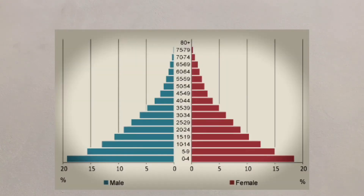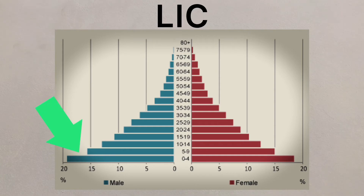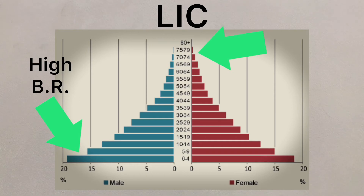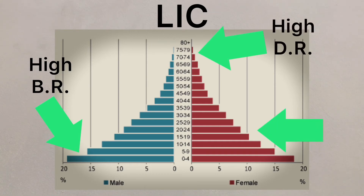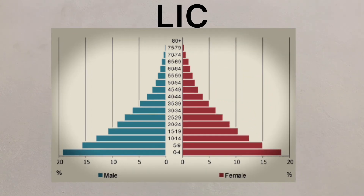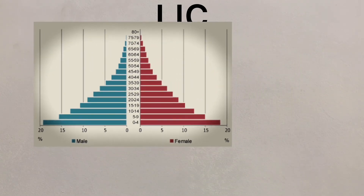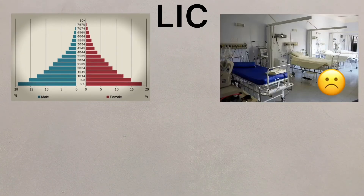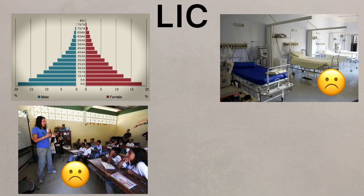This population pyramid indicates an LIC because the base is very wide, indicating a very high birth rate. The top of the pyramid is very narrow, suggesting a very high death rate. The pyramid also slopes in quickly, showing that people are dying in great numbers at each stage as they age. This LIC shape could indicate a lack of healthcare, education, or sanitation.